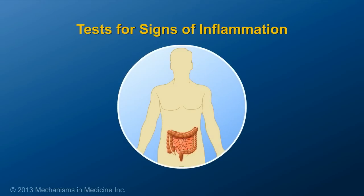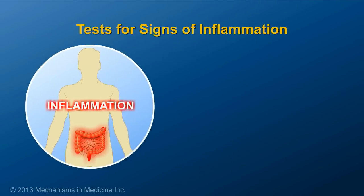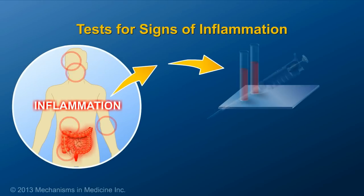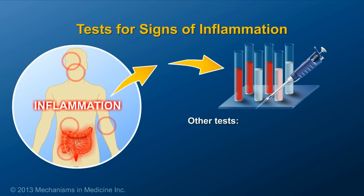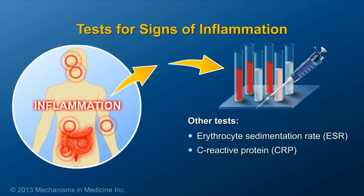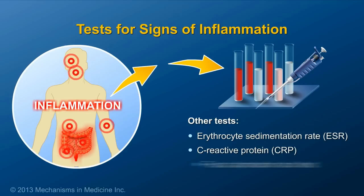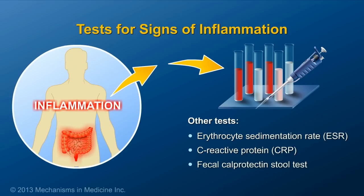Other tests may be done to look for signs of inflammation in the body. These include the erythrocyte sedimentation rate (ESR) and C-reactive protein (CRP) blood tests, and the fecal calprotectin stool test.